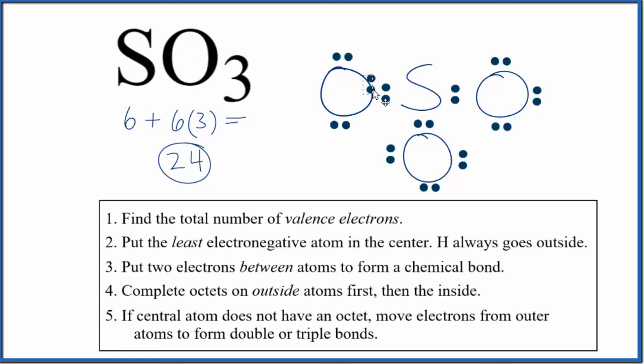So let's move two to the center here. We'll form a double bond. Now the sulfur, it'll have eight. This oxygen still has eight. So this is a valid Lewis structure for SO3, sulfur trioxide.